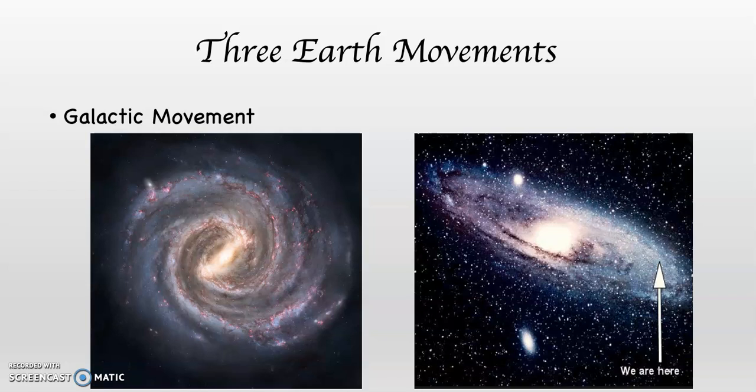On one of those arms that swirls around, it takes several hundred million years for the Milky Way to make one full revolution around itself.